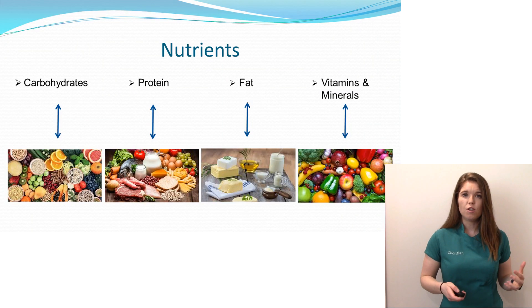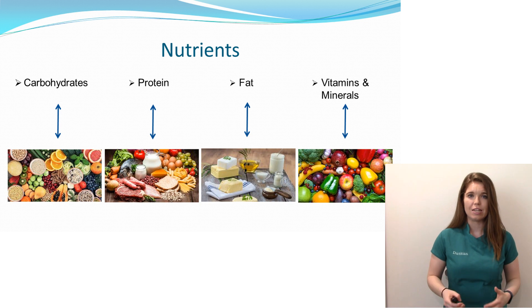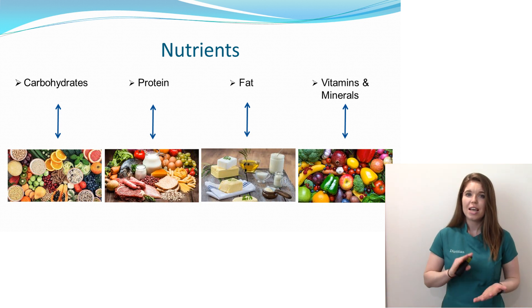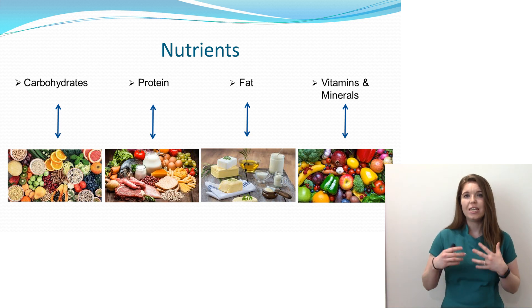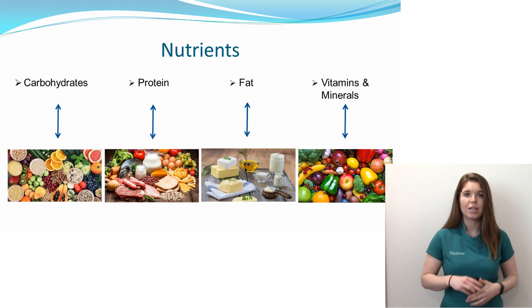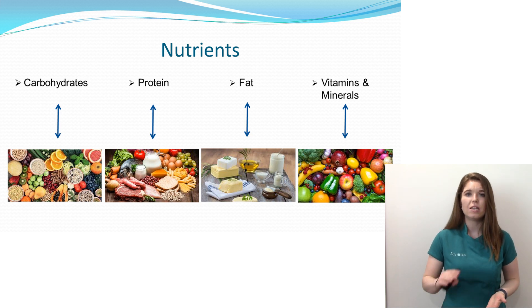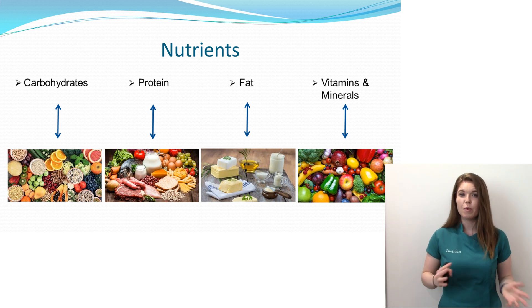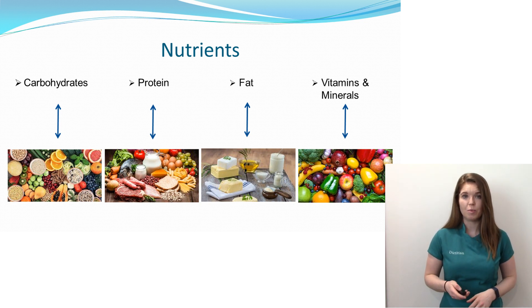There are a few main key nutrients in our diets. We have carbohydrates, proteins which are like meat, fish, eggs, cheese, peanut butter and things like that. We have fats which are oils and butters. And then we have vitamins and minerals which mainly come from a variety of foods, but particularly your fruits and vegetables.